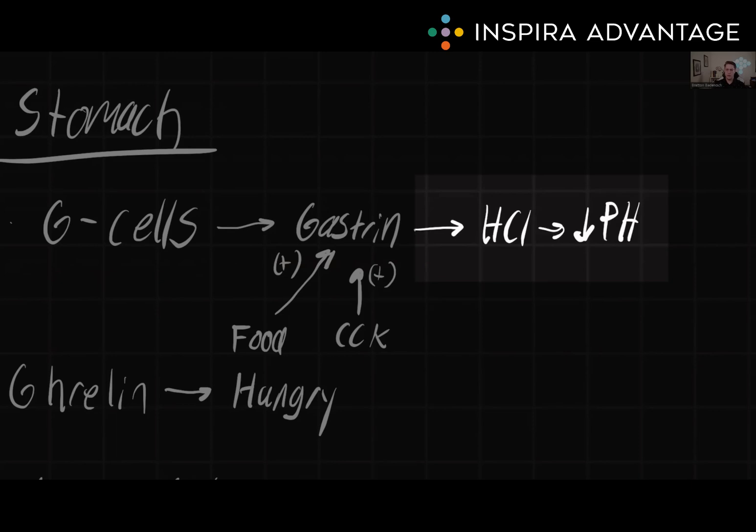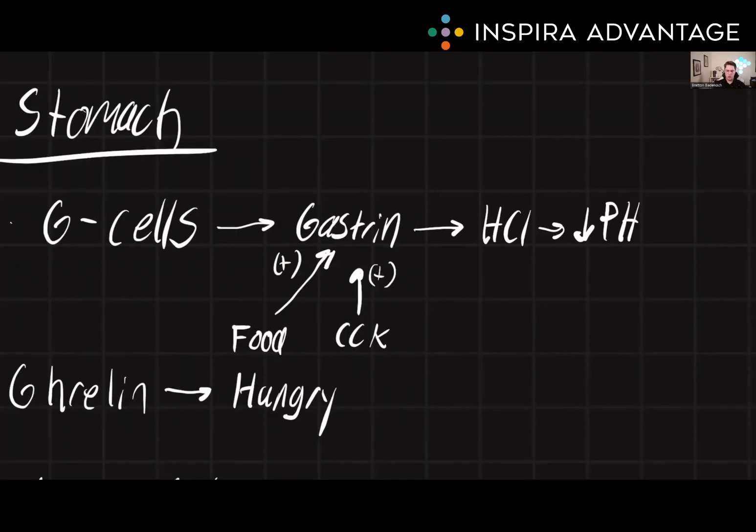This acid helps lower the pH of the stomach, which is necessary for activating pepsin and other enzymes involved in protein digestion. Gastrin also promotes the growth and repair of stomach lining by stimulating the proliferation of cells in the stomach.